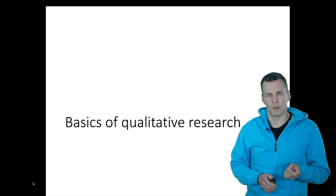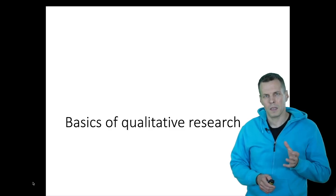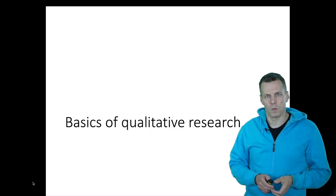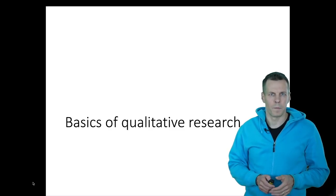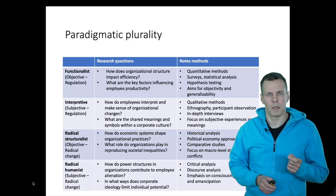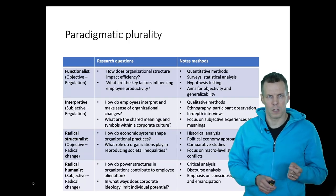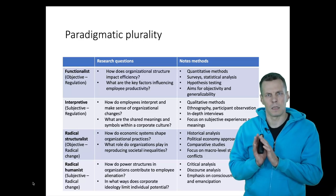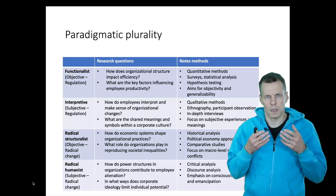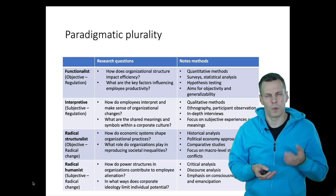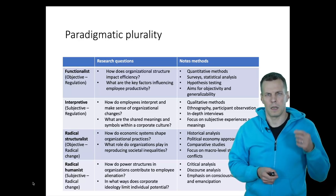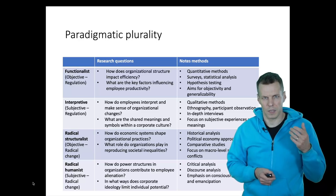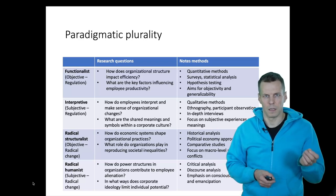In a previous video I gave a short introduction on what quantitative and qualitative researchers are about. Let's take a look now in more detail at what qualitative research is. One thing that differentiates qualitative research from quantitative research is that qualitative research can follow multiple different paradigms. A quantitative researcher typically uses numbers and assumes that those numbers represent reality and that reality is the same for everybody.